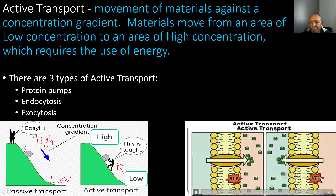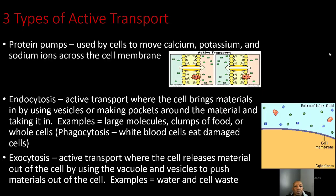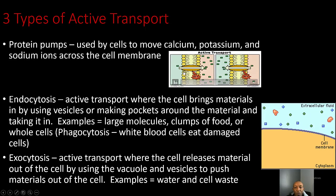The first type of active transport is protein pumps, which are used by cells to move calcium, potassium, and sodium ions across the cell membrane. Protein pumps are used because these molecules are much larger than normal molecules, requiring energy and special protein pumps to move them across the cell membrane from an area of low concentration to high concentration.